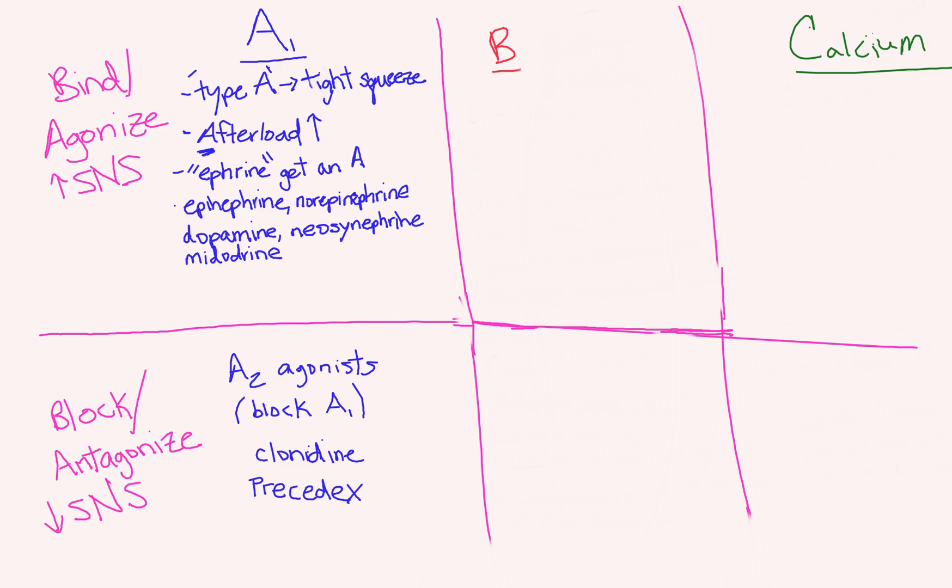In the bottom column, we have our alpha 2 agonists, which end up blocking alpha 1 by working centrally. Clonidine and Precedex are examples of those drugs. Remember that they work centrally, so they're going to cause some CNS depression, some sedation, as well as vasodilation.